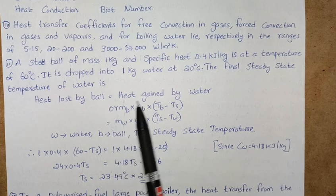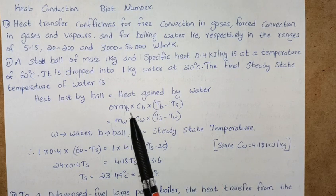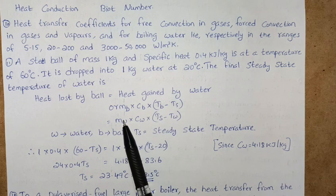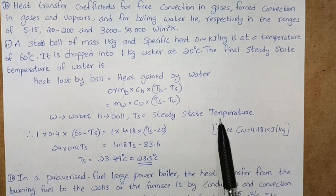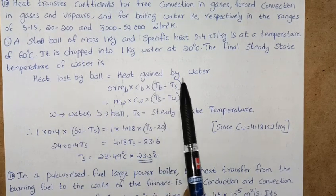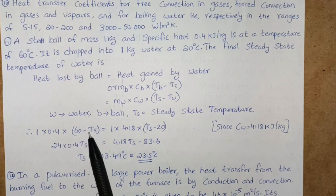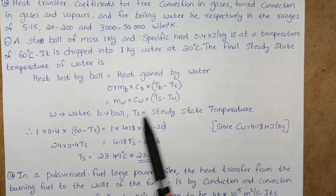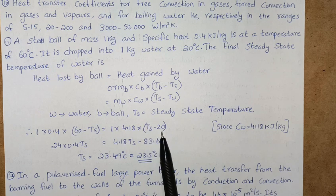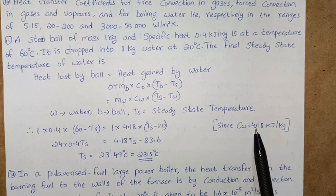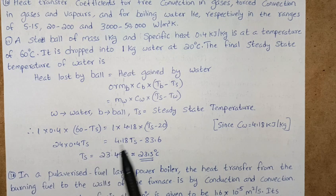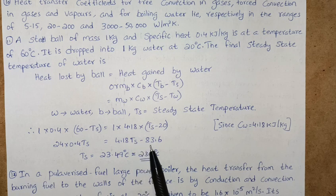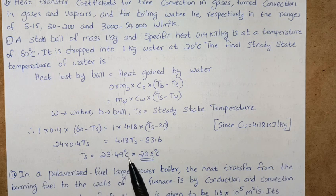So we know: heat lost by ball equals heat gained by water, so we write mb*cb*(Tb-Ts) equals mw*cw*(Ts-Tw), where w is water, b is for ball, Ts is steady state temperature. So here we are writing 1 times 0.4 times (60-Ts) equals 1 times 4.18 times (Ts-20), since cw equals 4.18 kilojoules per kg. Next we'll get 24 equals 0.4Ts plus 4.18Ts minus 83.6, so we will get the final steady state temperature that is 23.49 degree centigrade, that is approximately equal to 23.5 degree centigrade. So like that you'll get small problems, practice these problems.